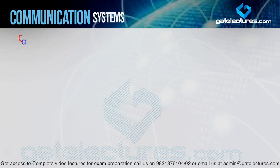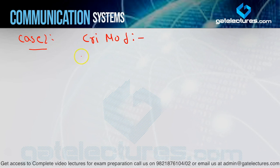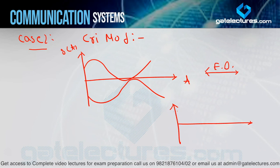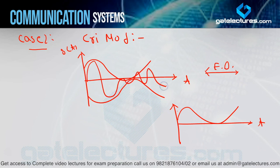Case 2 is critical modulation. For critical modulation, the waveform just touches zero on both the positive and negative sides. When you pass this through the envelope detector, the output — the positive envelope — again has exactly the same shape as the message signal. The message signal is recovered correctly with no problem. Envelope detector means positive envelope.